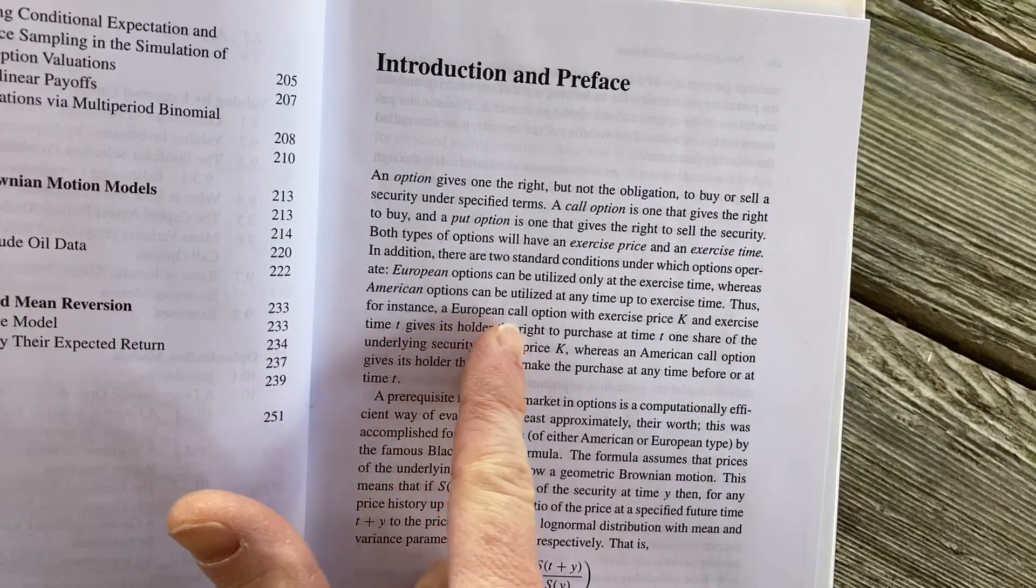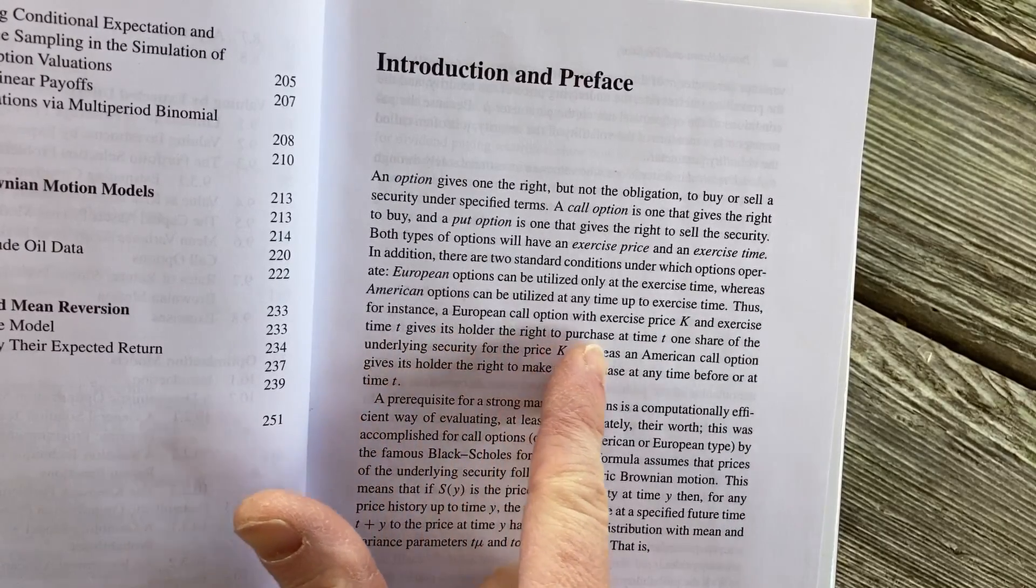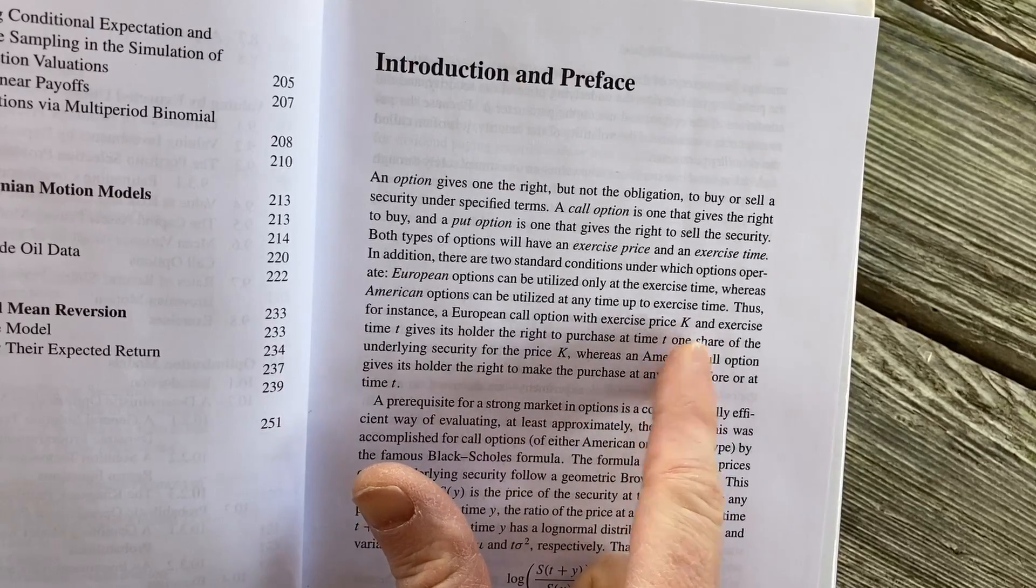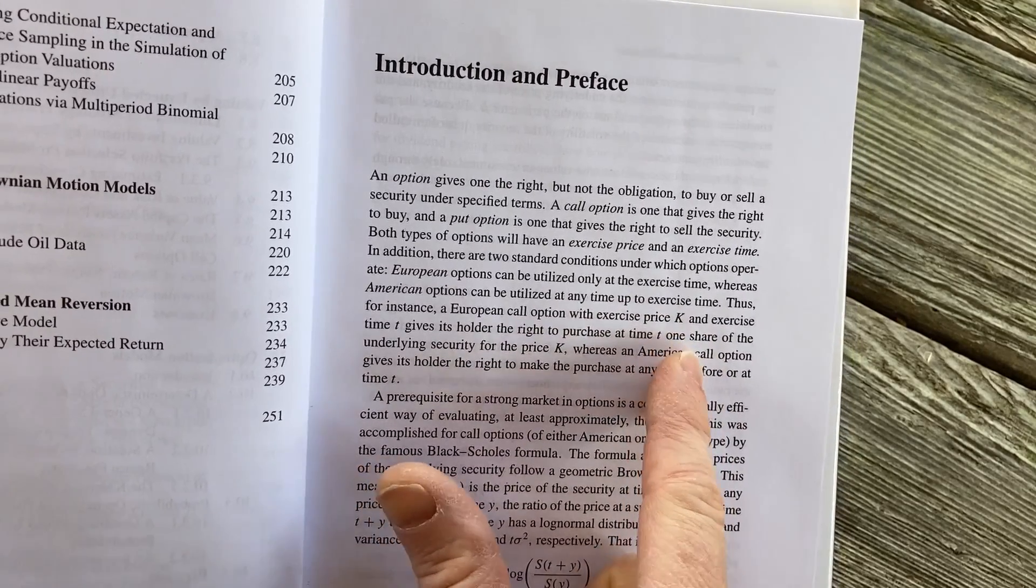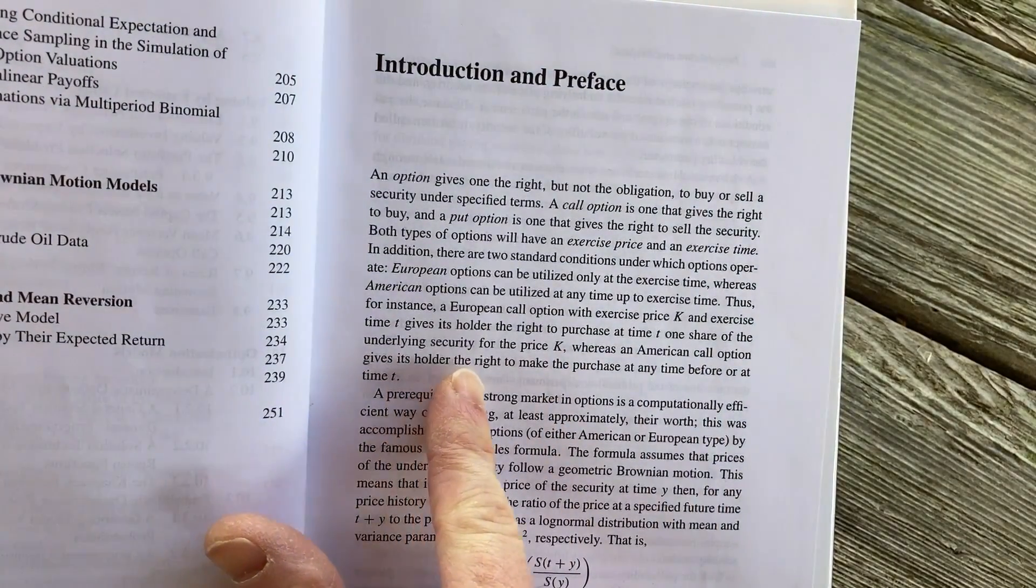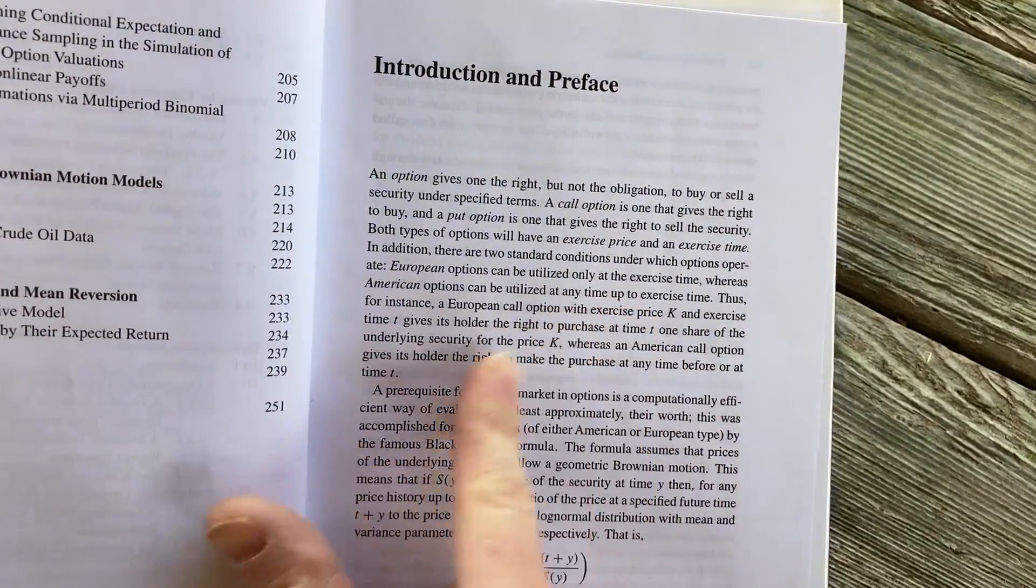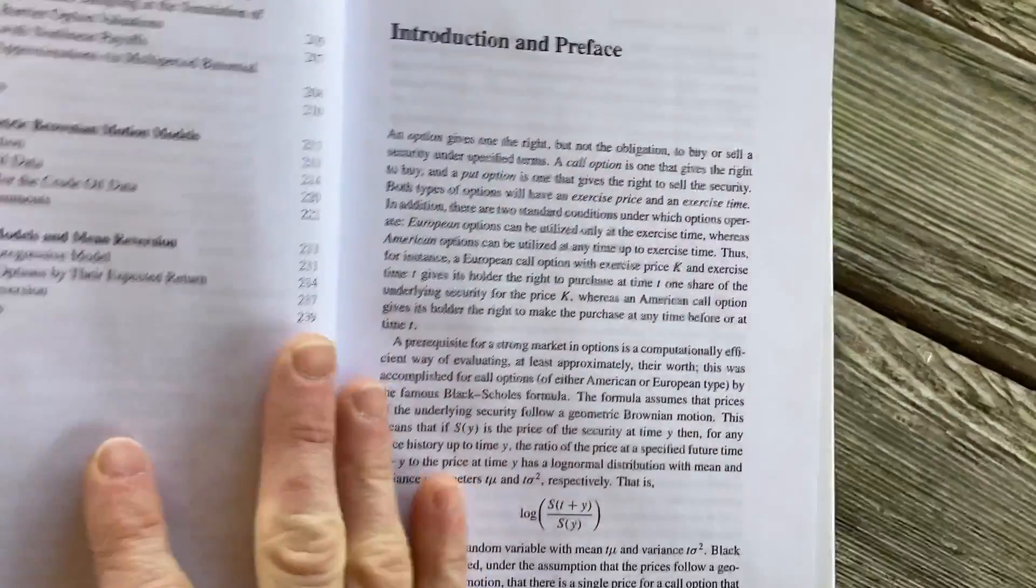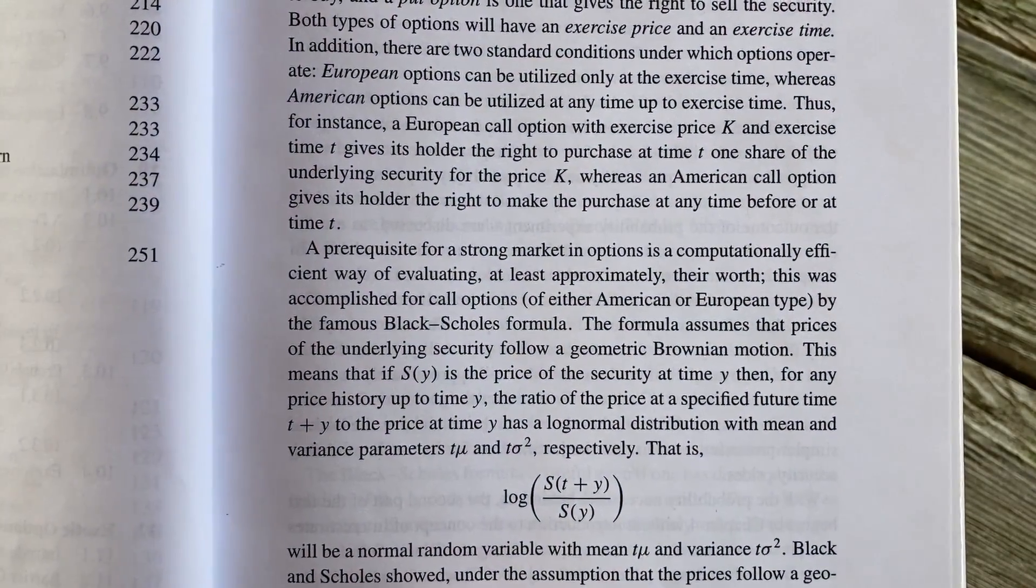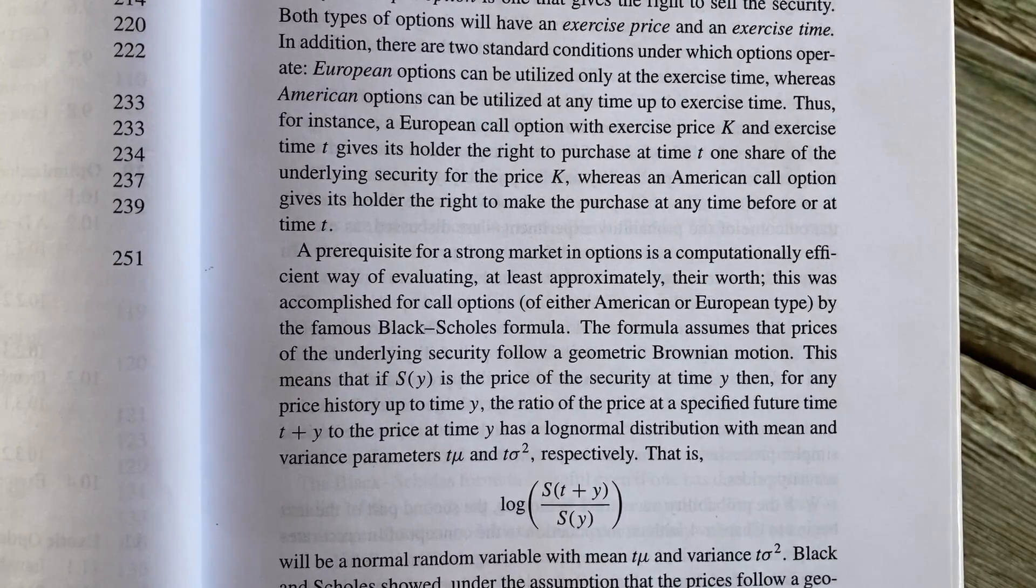Thus, for instance, a European call option with exercise price K and time T gives its holder the right to purchase at time T one share of the underlying security for price K. Now here it says one share. In practice, it's a hundred shares. Like in the US stock market, whereas an American call option gives its holder the right to make the purchase at any time before or after time T. So that's the only difference is when you can exercise between European and American. But again, for stocks, it's usually a hundred shares.